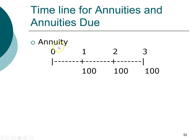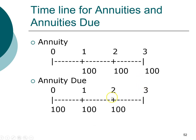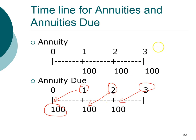Here's a timeline of what an ordinary annuity looks like. For an ordinary annuity, cash flows occur at the end of each period — for example, you receive $100 at the end of year one, $100 at the end of year two, and $100 at the end of year three. For an annuity due, the cash flows occur at the beginning of each period: $100 at the beginning of year one, year two, year three, and so forth.